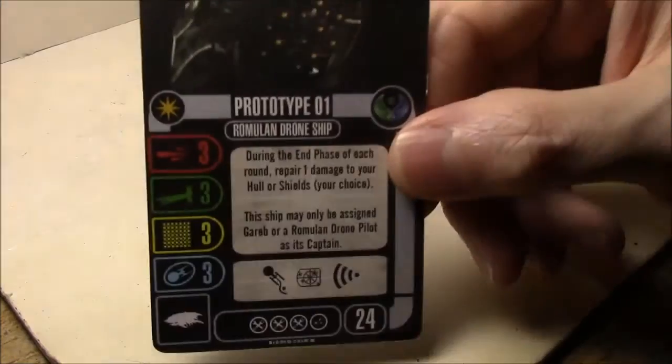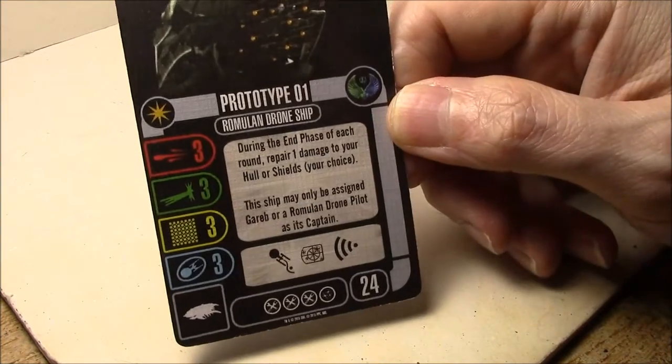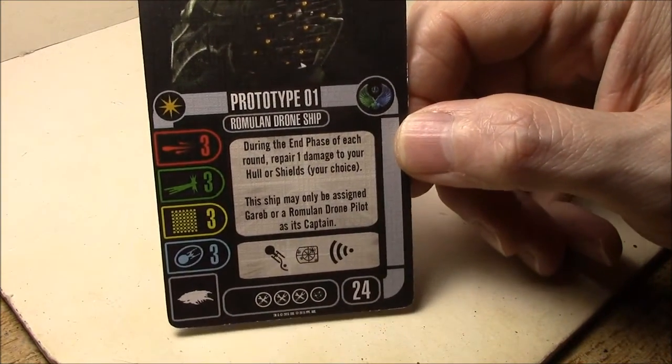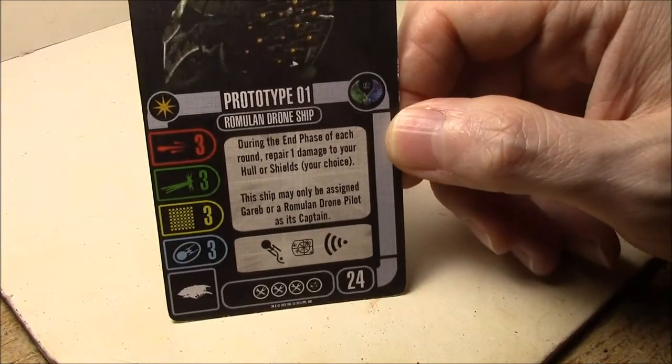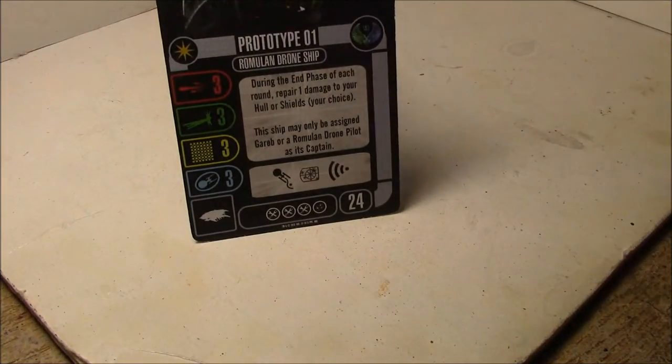So what do you get for 24 points? You get 3-3-3-3, very easy to remember. During the end phase of each turn, repair one hull or shields. This is an absolutely amazing ability for something with three shields and three agility. So it's got a lot of survivability.